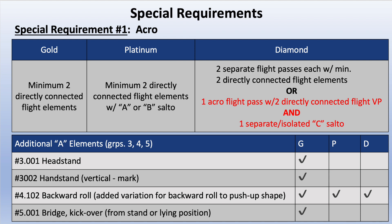Special Requirement 1 for Gold is a minimum of 2 directly connected flight elements. For Platinum it's a minimum of 2 directly connected flight elements with an A or B salto. For Diamond it's 2 separate flight passes, each with a minimum of 2 directly connected flight elements, or 1 acro flight pass with 2 directly connected flight elements. Additional elements receiving A credit from groups 3, 4, and 5 include a headstand at Gold, a handstand marked at vertical at Gold, and a backward roll with the added variation of a backward roll to the push-up shape for Gold, Platinum, and Diamond.